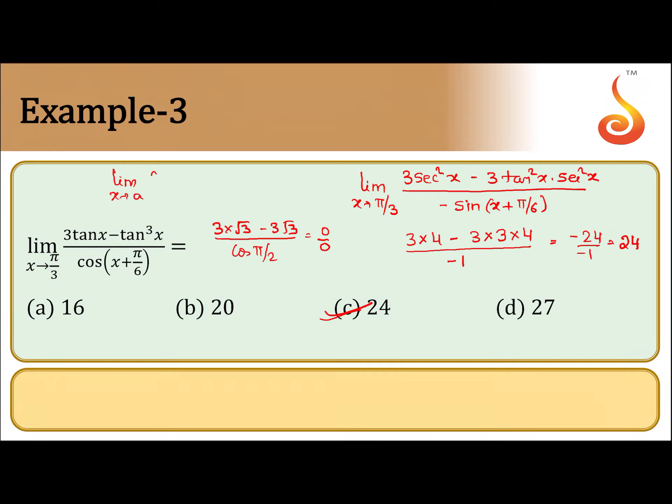Limit extending to a, f of x by g of x where f of a is 0, g of a is 0, so it is taking form 0 by 0. Differentiating numerator and denominator separately, then substituting the limit, we got a finite limit.